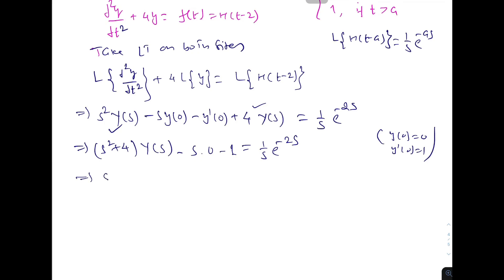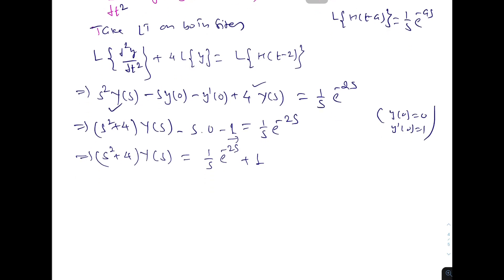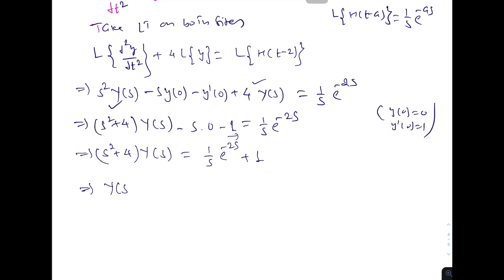Therefore (s² + 4)Y(s) = (1/s)e^(-2s) + 1, which gives Y(s) = [e^(-2s)] / [s(s² + 4)] + 1/(s² + 4).